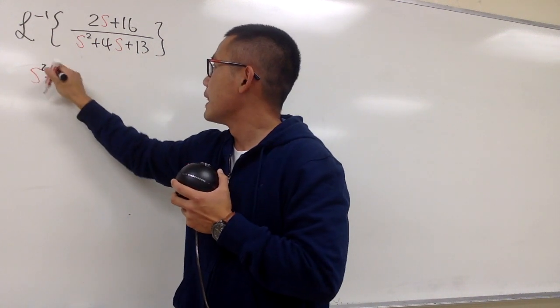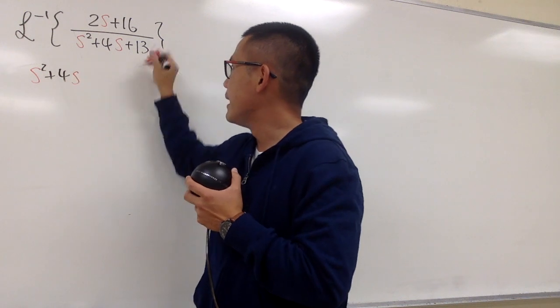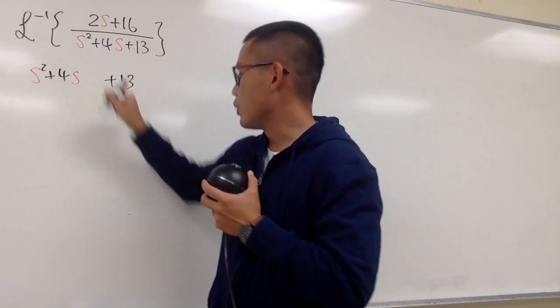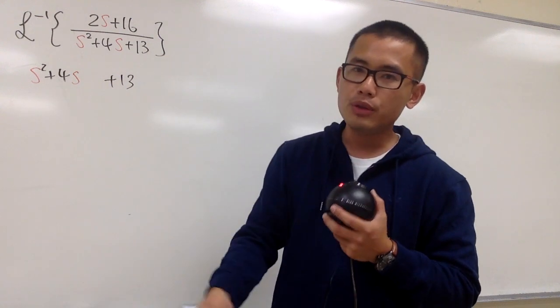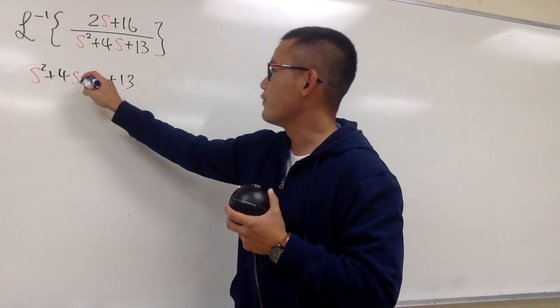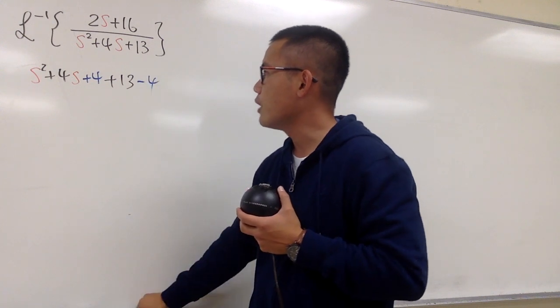s squared plus 4s, and leave a space, and then put on plus 13. Wait, what number do I need right here? Let's look at this, which is 4, divided by 2, which is 2, square that, which is 4, so let's put on plus 4, and be sure you minus 4 right here as well.